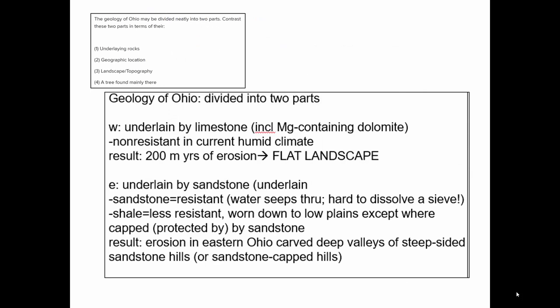And we learned about geobotany. Simply stated, eastern Ohio is underlain by sandstone, which is resistant to erosion except in some places where it's not protected, so it wore away. We have deep ravines and a very dissected landscape of hills capped with sandstone. In western Ohio, erosion flattened the landscape, and it's underlain by calcareous materials like limestone — basically alkaline in pH.